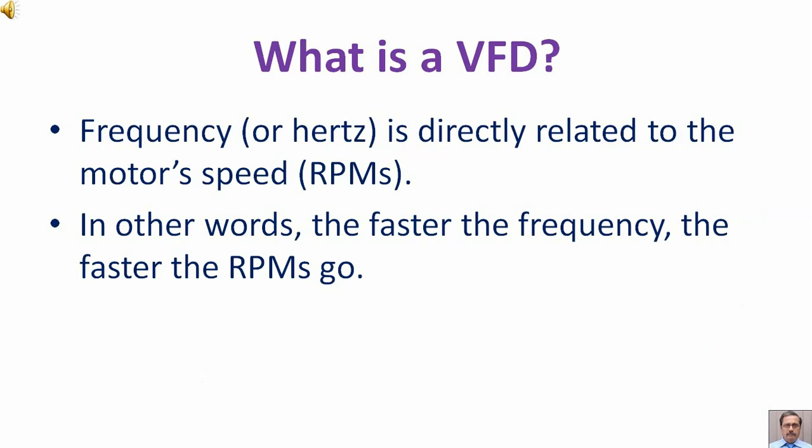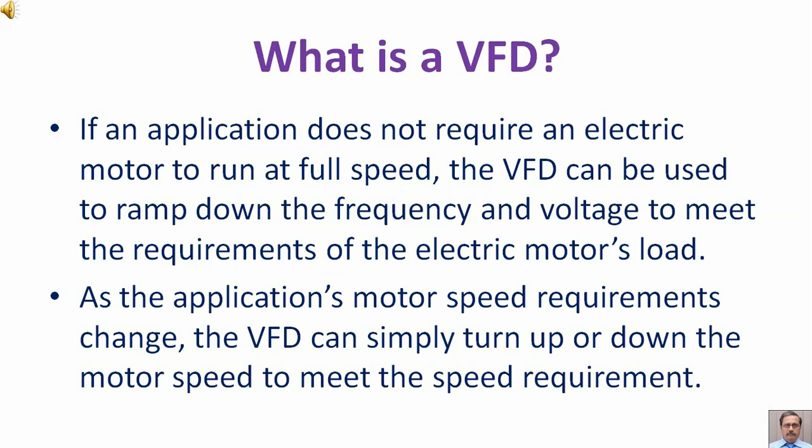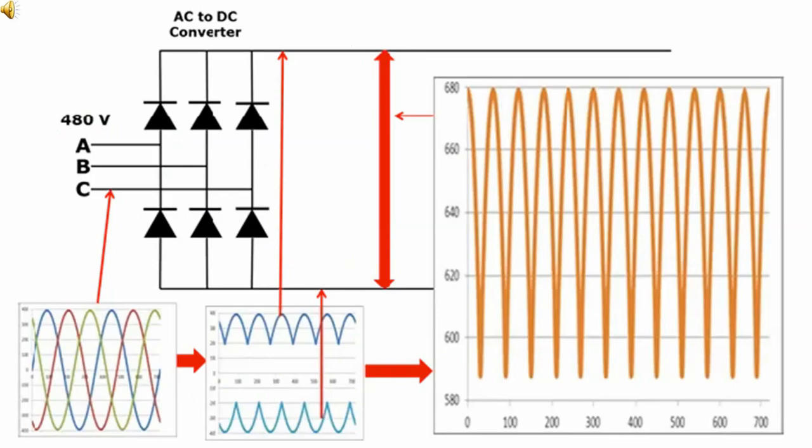Frequency or Hertz is directly related to the motor speed RPM. In other words, the faster the frequency, the faster the RPMs go. If an application does not require an electric motor to run at full speed, the VFD can be used to ramp down the frequency and voltage to meet the requirements of the electric motor's load. As the application's motor speed requirements change, the VFD can simply turn up or down the motor speed to meet the speed requirement.